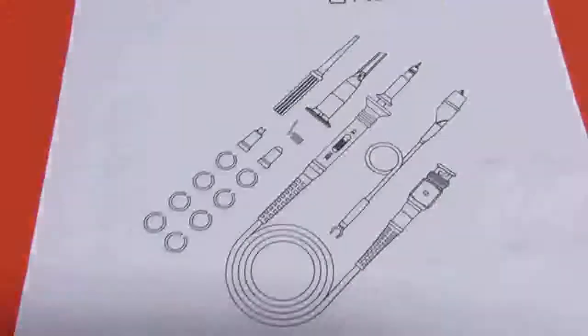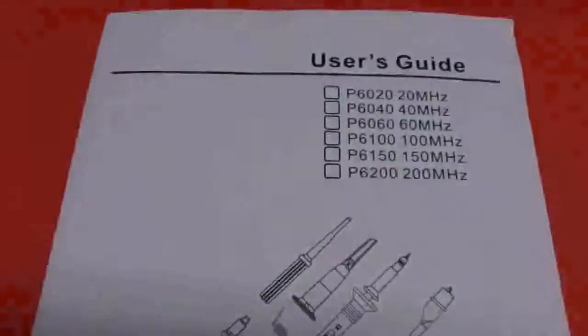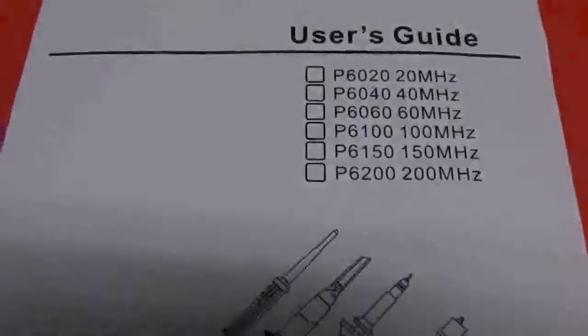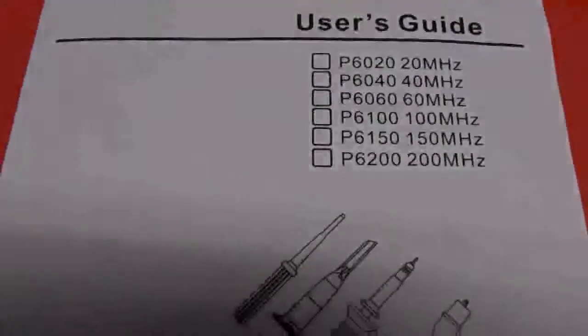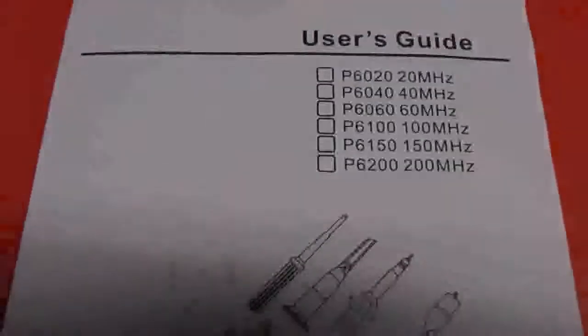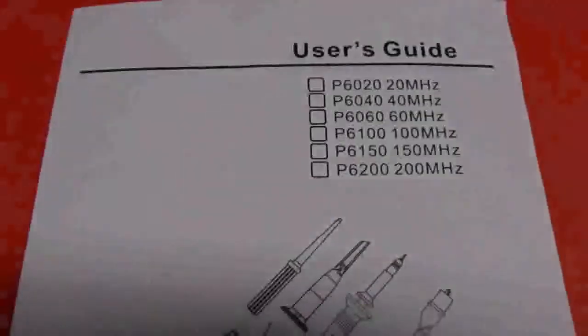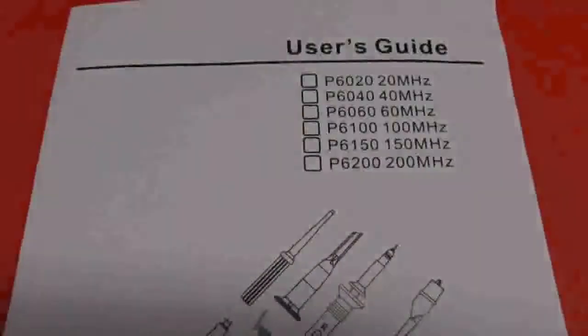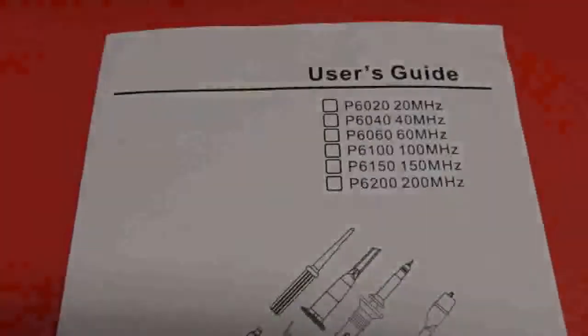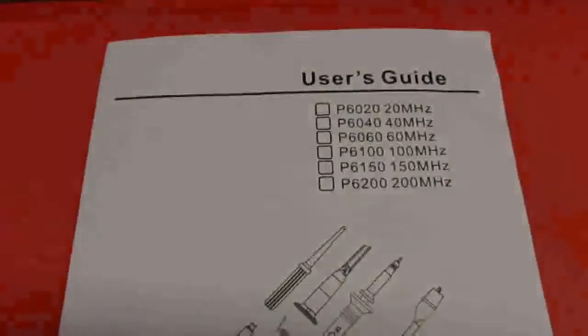So I ordered these probes from Janeco. This is the P6100, which is 100 MHz. I think that's probably the max bandwidth for this scope. And I'm going to show you how I modified them to work with my Sencore SC61.